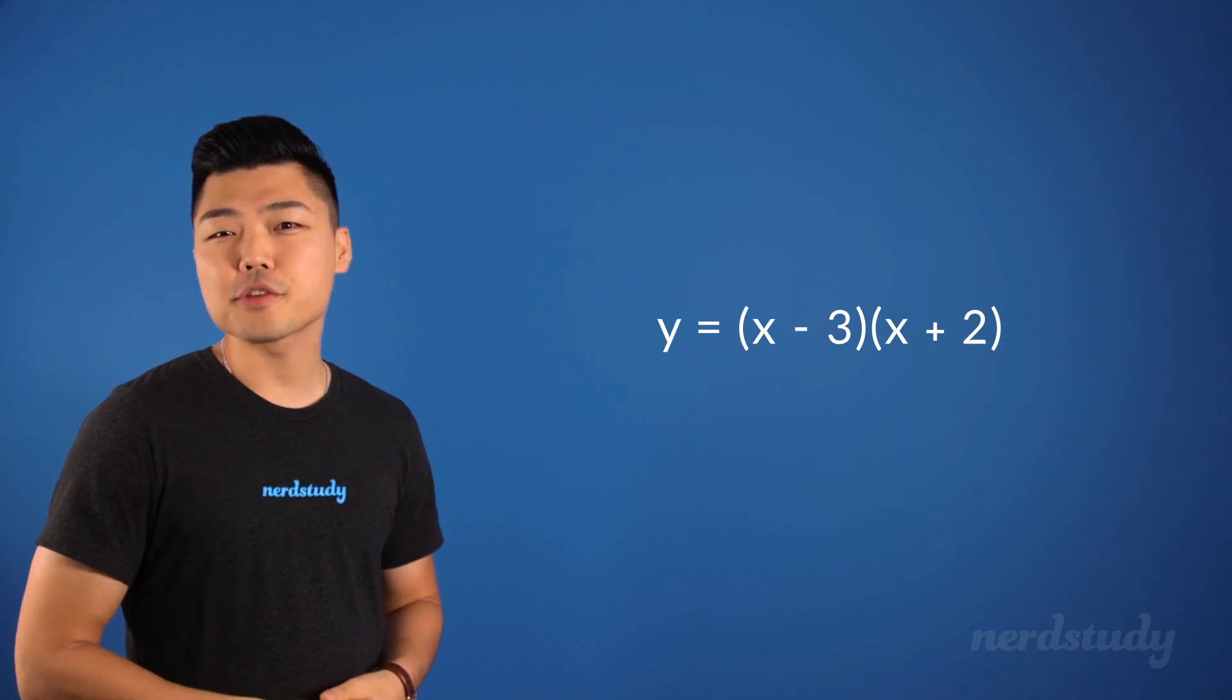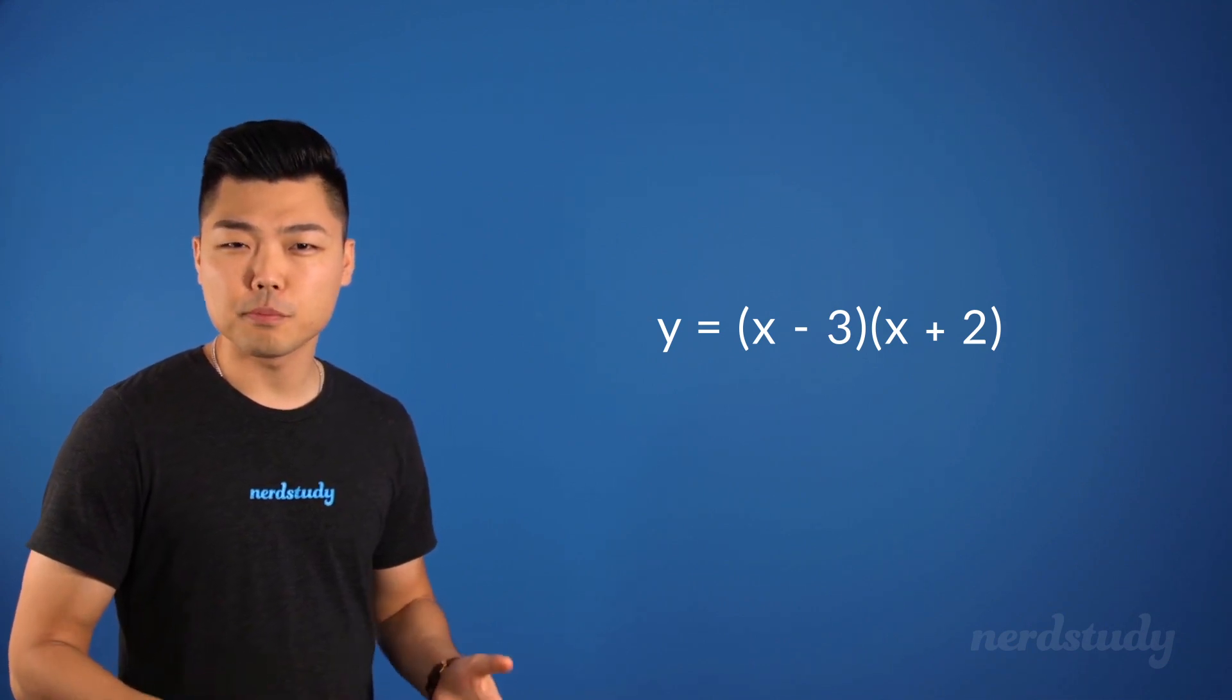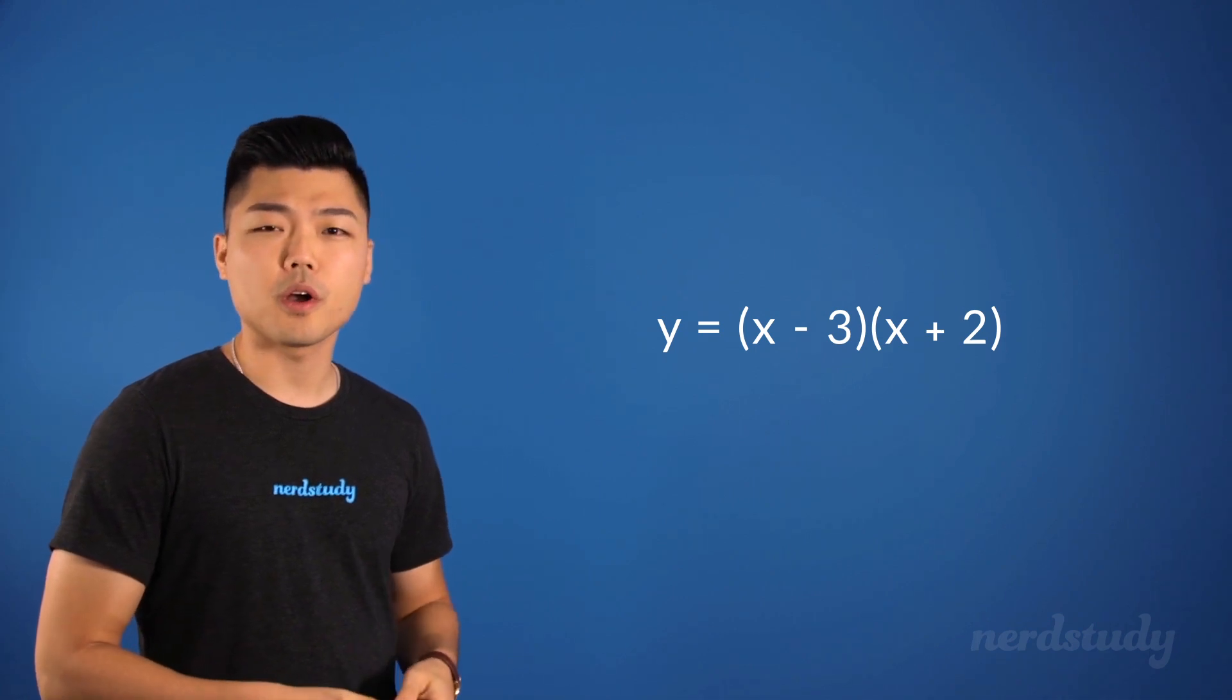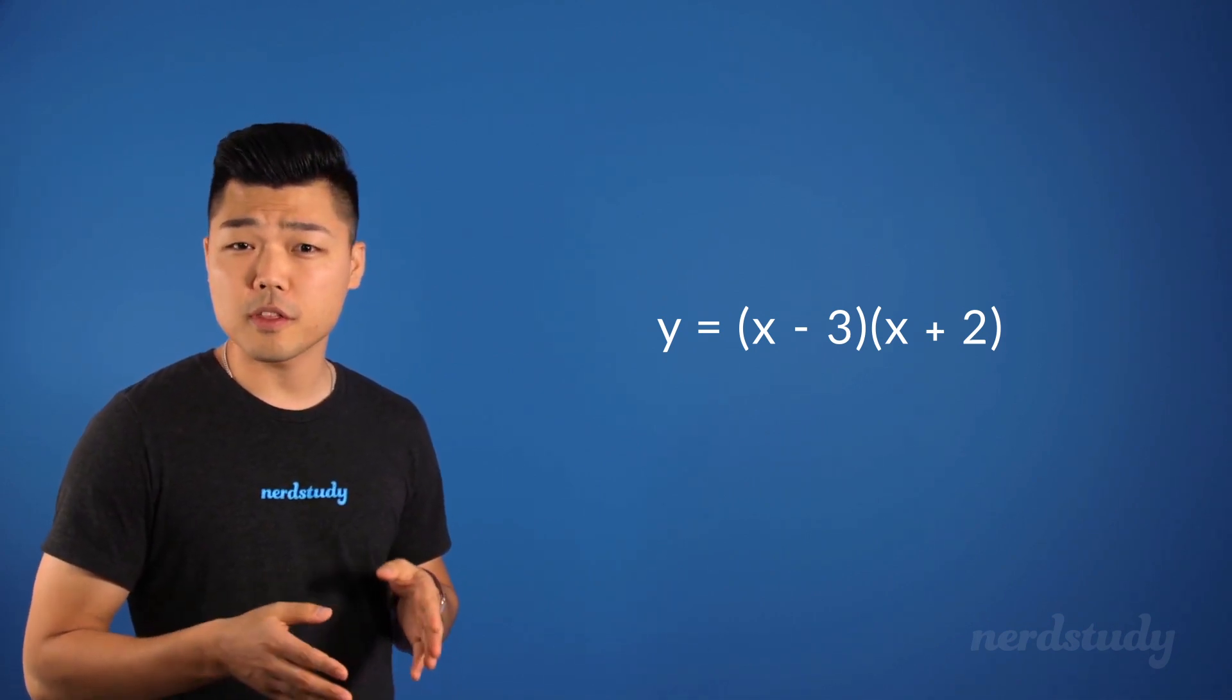We've looked at quadratics where two binomials multiply with each other. For example, y equals x minus 3 multiplied by x plus 2. Now, there are some situations where we would see similarities within the expressions.